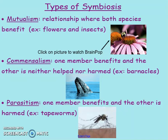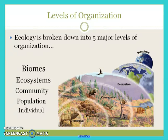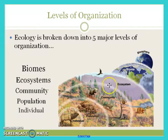To recap, the five levels you need to know start from individual, build up to population, to community, to ecosystem, to biomes. And that's what you need to know about the different levels of organization for ecology.